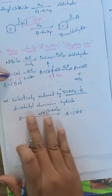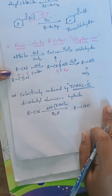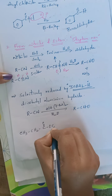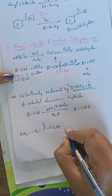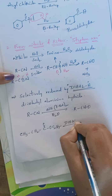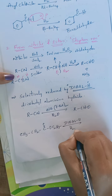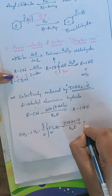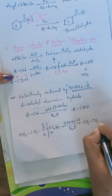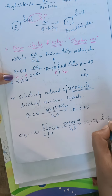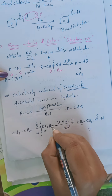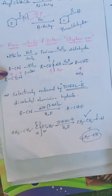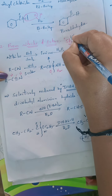Even esters can be reduced by DIBAL-H. Taking ester CH₃CH₂–C(=O)–O–C₂H₅: when it undergoes reduction in presence of DIBAL-H followed by hydrolysis, the bond breaks, one hydrogen is added to the carbonyl carbon, giving CH₃CH₂–CHO (aldehyde) plus C₂H₅OH as a byproduct. Aldehyde is the primary product. This reaction is also part of the Stephen reaction framework — important for two marks.